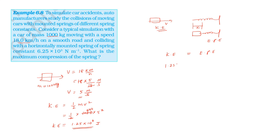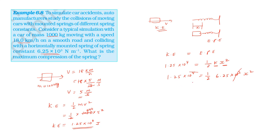The kinetic energy 1.25 into 10 power 4 is equal to the elastic potential energy, in the form of half k x squared. Here k is the spring constant and x is the compression. Spring constant is 6.25 into 10 power 3. So 1.25 into 10 power 4 is equal to one half into k, where k equals 6.25 into 10 power 3.